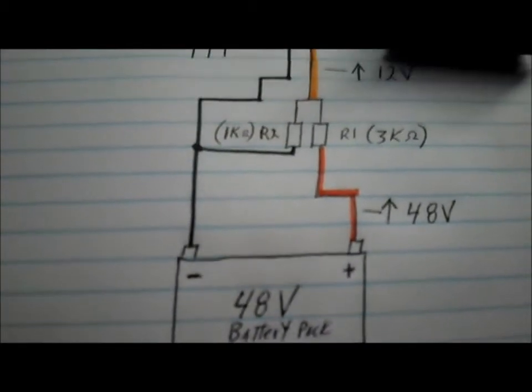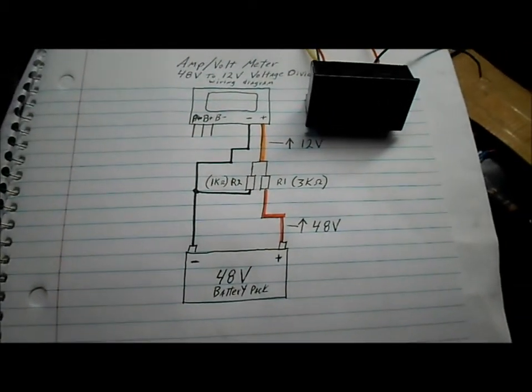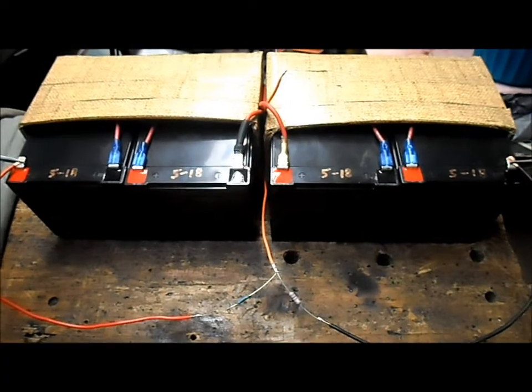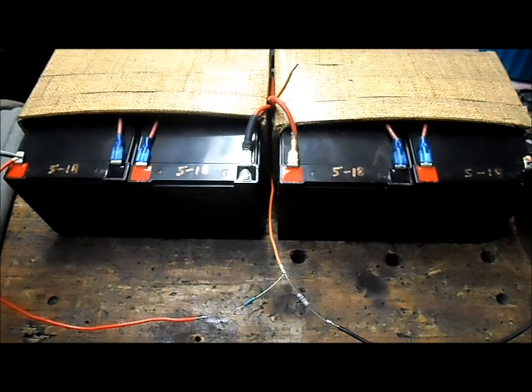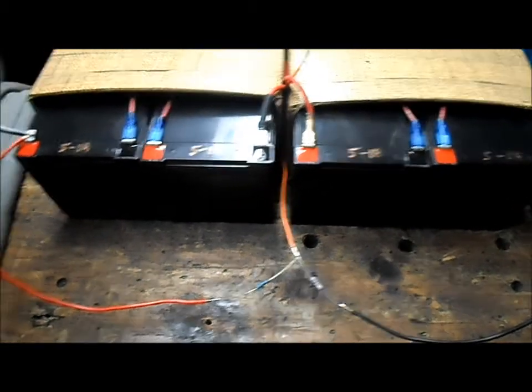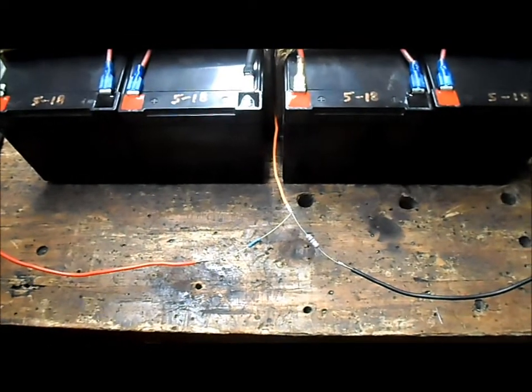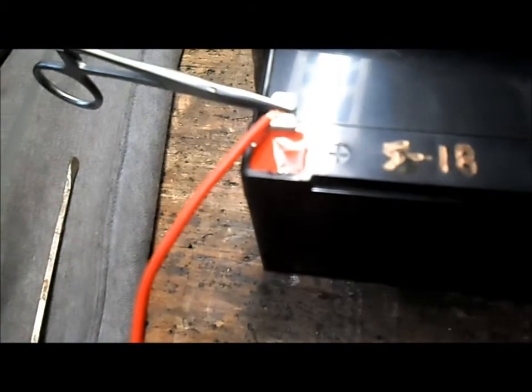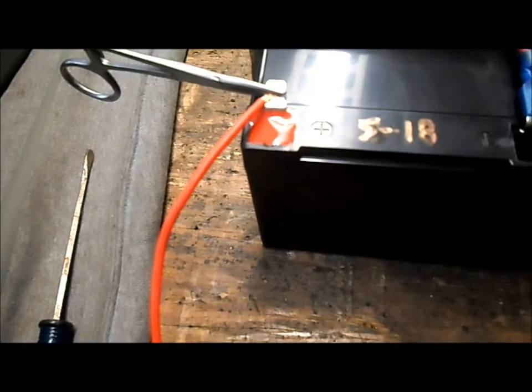Okay, we've got a 48-volt battery pack, we've got two resistors and three wires, just like our diagram. Our red wire coming from the positive of the 48-volt battery pack.